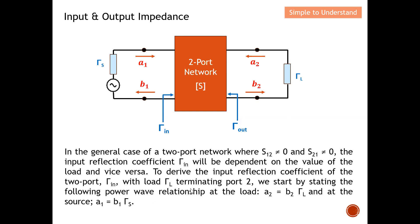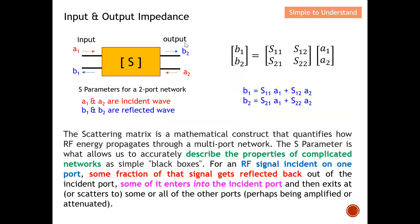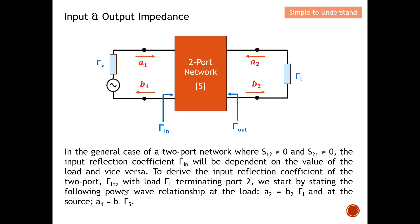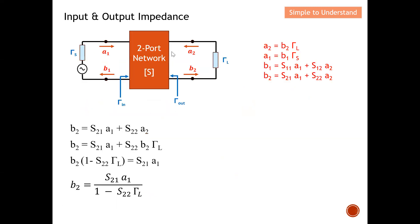We can start by stating the power wave relationship at the load. At port 2, you can see the incident wave, the reflected wave, and the load — described as the power wave relationship at the load. We can also describe the power wave relationship at the source, as shown. This is a quick recall of what was discussed earlier. If you want more detail, refer to the S-parameter part 2 series. I'll be making use of these equations going forward.